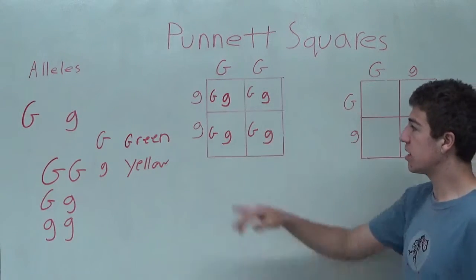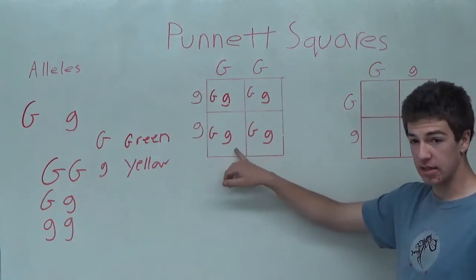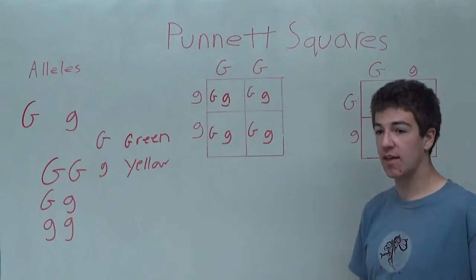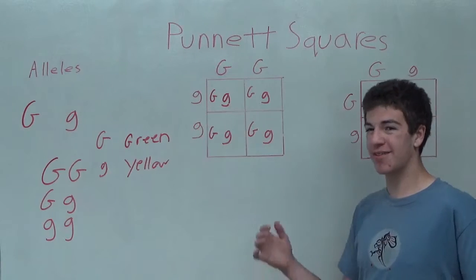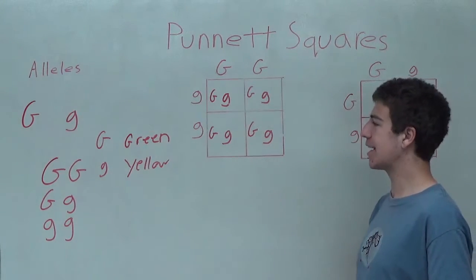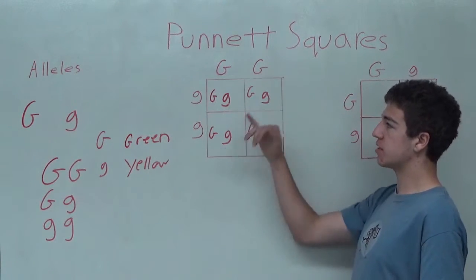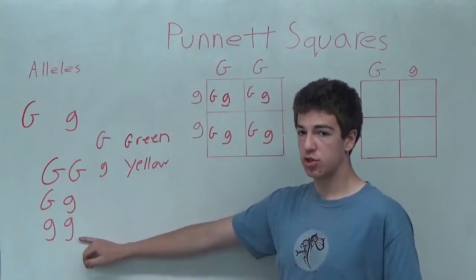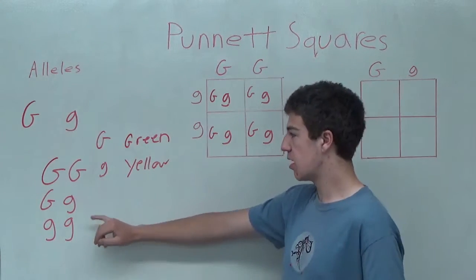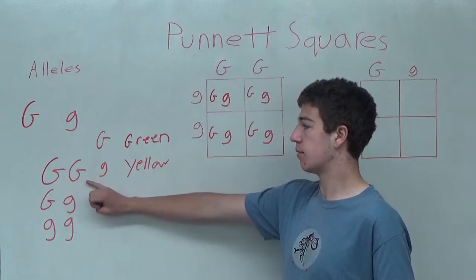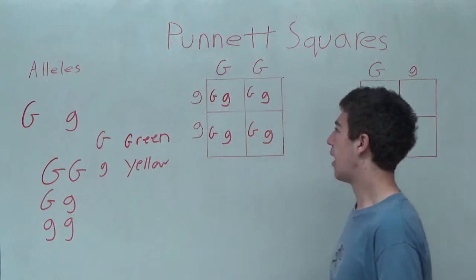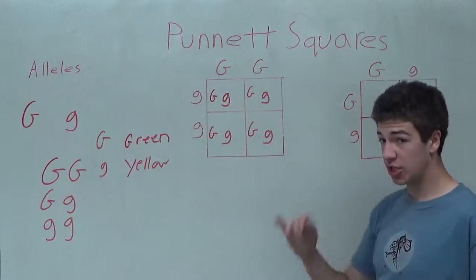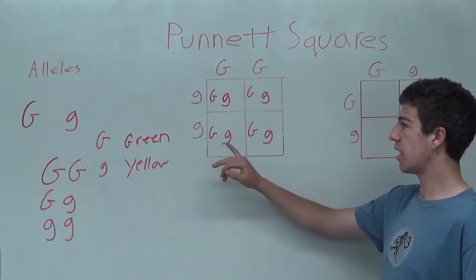And now, these are the four possibilities for the offspring's alleles. However, as you see, they are all identical. Therefore, it is impossible for the offspring of these two parents to have either yellow, with two lowercase recessive genes, or two uppercase dominant alleles. So there's a 100% chance of you having a genotype of capital G and lowercase g.